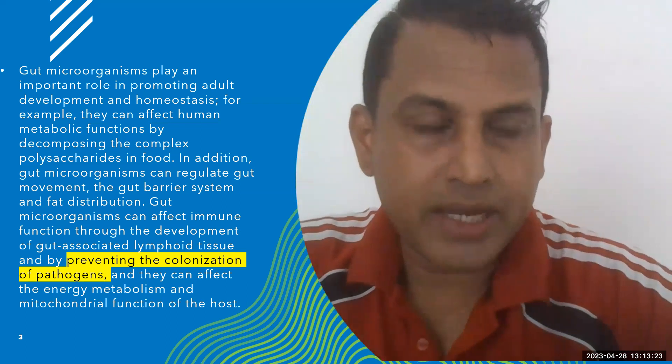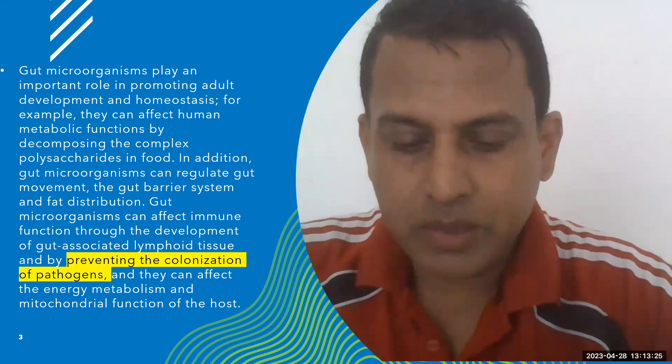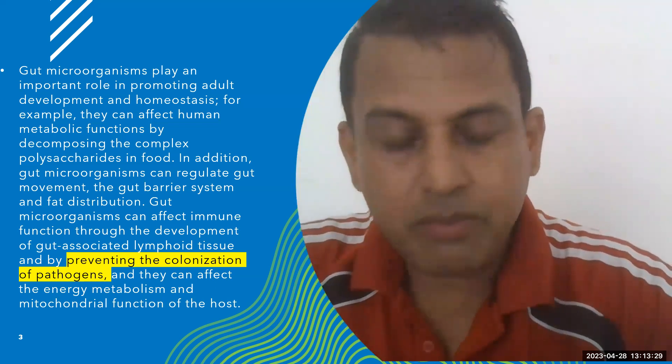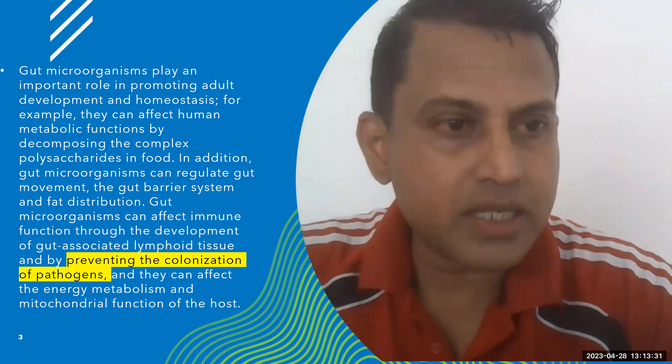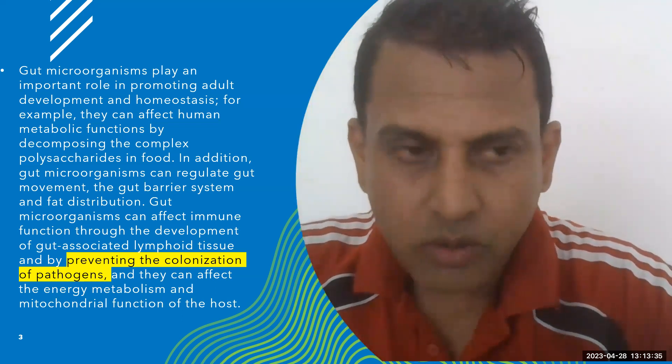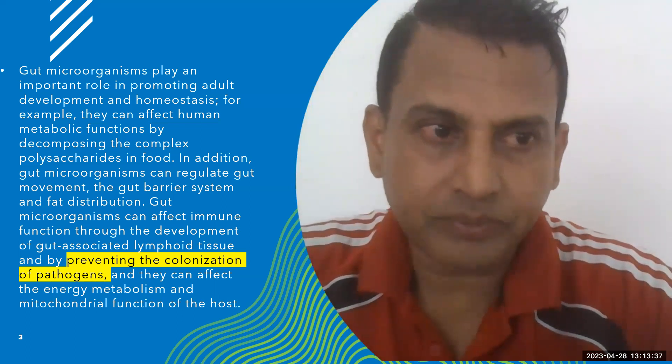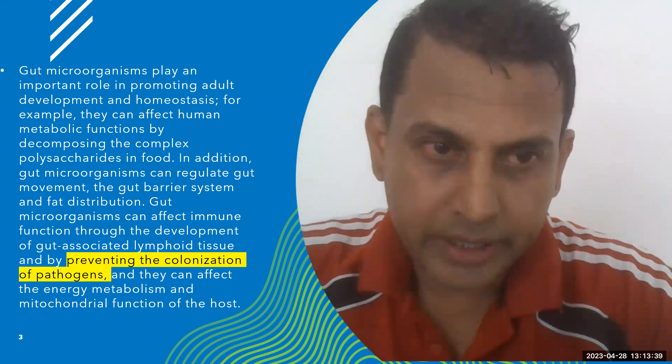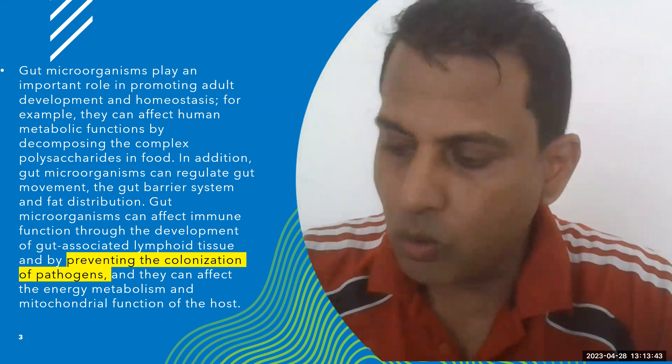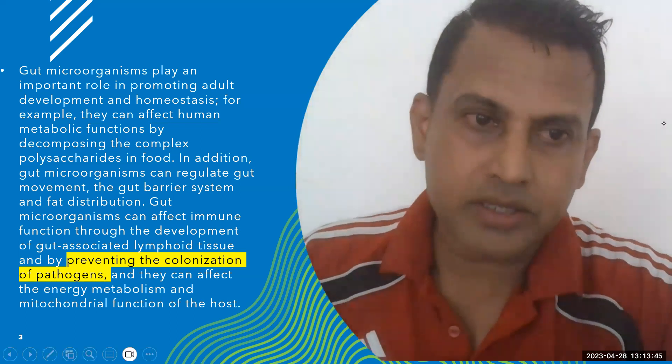Innate immune system has external defense, physical barrier, chemical barrier, and the biological barrier. So we briefly discussed the microorganisms, gut microorganisms in immunity. Here we have to understand a little bit more than that in this research article.